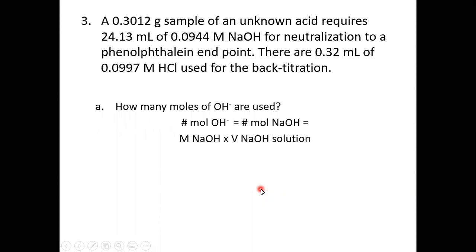Our last question mimics the actual point of this lab — the unknown part. We're given a sample of acid; we don't know what it is, just that it's a monoprotic acid, and we want to find its molar mass. They give us the mass of the unknown acid, the volume and molarity of NaOH, and 0.32 mL of 0.0997 M HCl used for back titration. A back titration means you went past the endpoint — you added too much titrant.